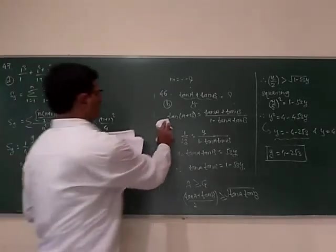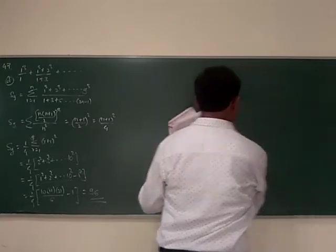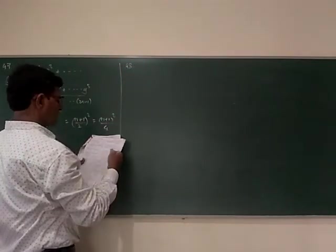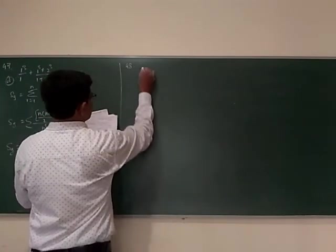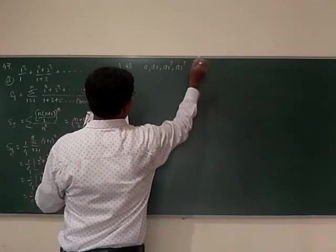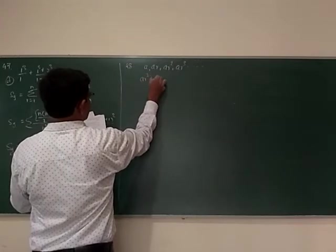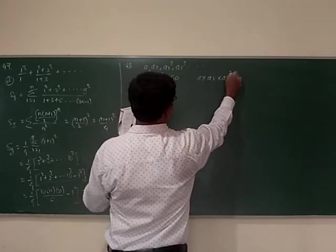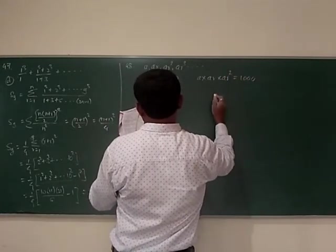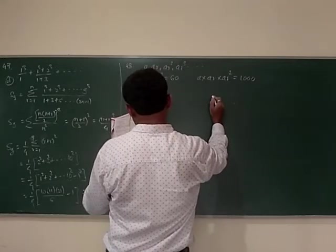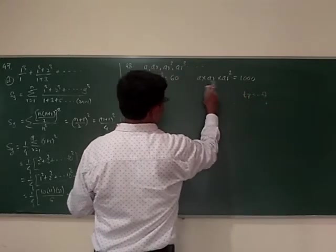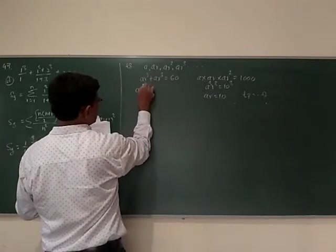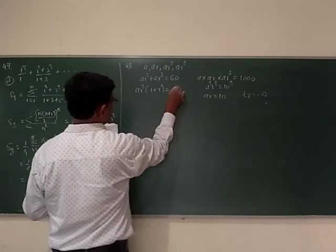Question number 48: Sum of 3rd and 4th terms of geometric progression is 60. The terms are A, AR, AR square, AR cube. So AR square plus AR cube equals 60. And the product of first 3 terms, A times AR times AR square equals 1000. Taking AR square common: 1 plus R equals 60.